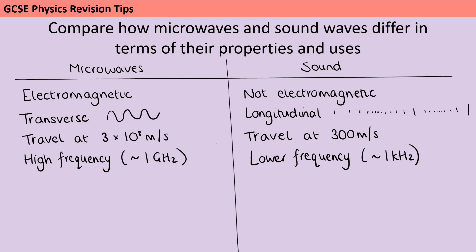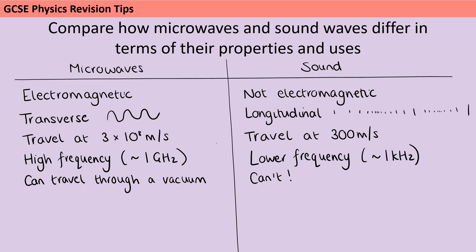Electromagnetic waves like microwaves can travel through a vacuum, whereas sound waves can't — sound waves need particles in order to travel. That's why you can see things in space but you can't hear things.